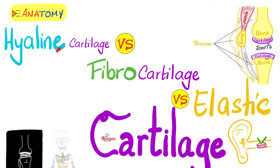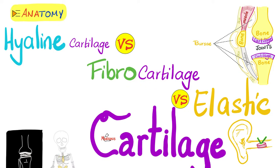Just a quick reminder that hyaline cartilage exists at articular surfaces as well as the epiphyseal growth plate. Fibrocartilage is fibrous and very strong, with cells that look like fibroblasts. It is placed in the midline to bear the burden of body weight, so you find fibrocartilage in the intervertebral discs as well as the symphysis pubis.